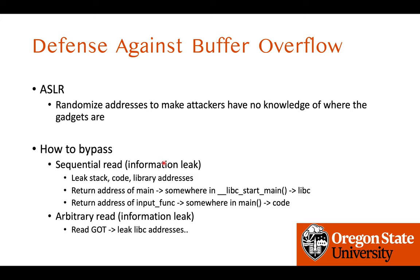Next is ASLR — it randomizes addresses, which drastically drops the success rate of attacks. But this defense cannot hold if an information leak has occurred via arbitrary read or sequential read vulnerabilities. If attackers know one address from a region, for example by leaking a stack address, they can break the randomization of the entire stack because relative offsets within the region are fixed.